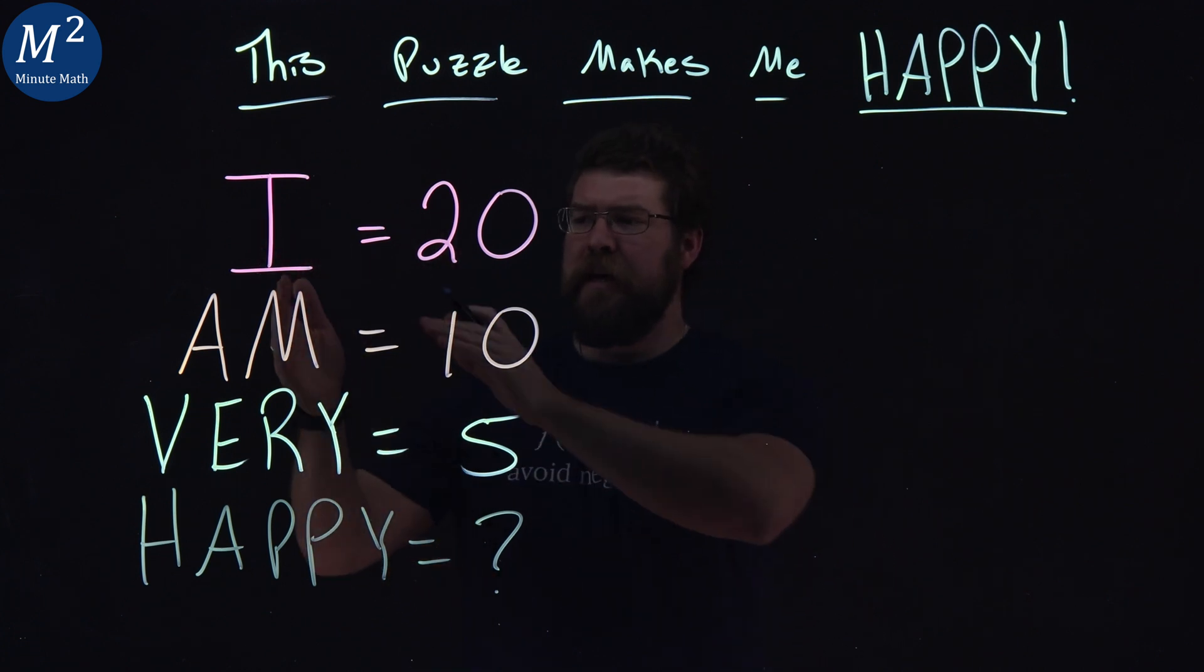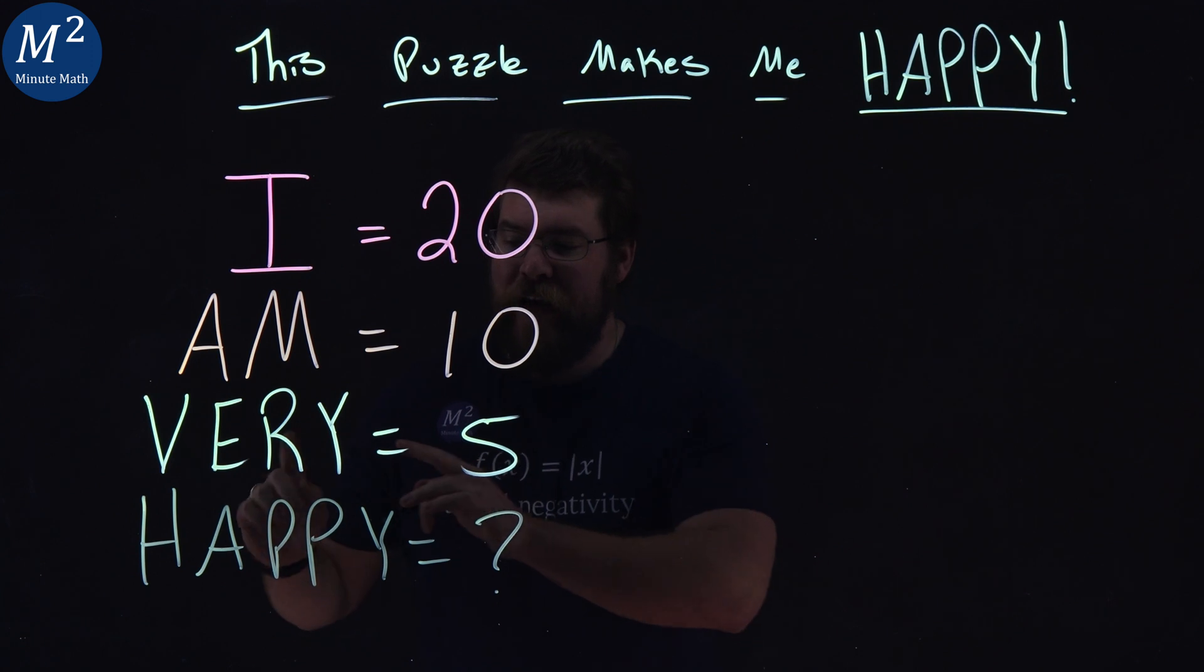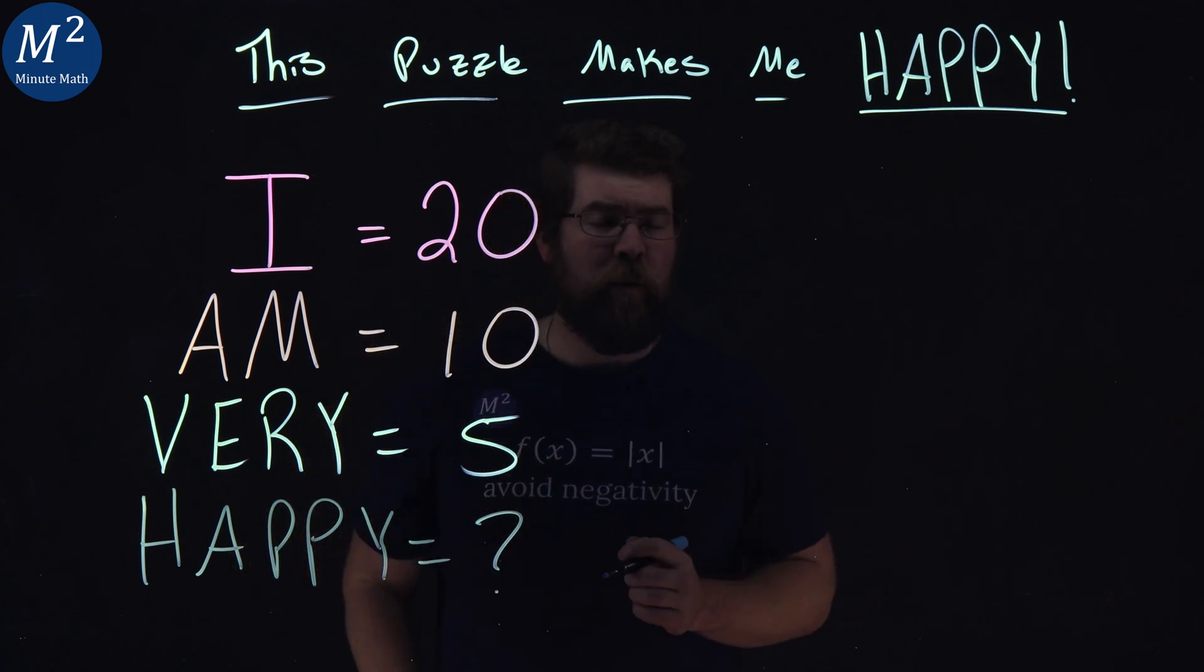I equals 20, am equals 10, very equals 5, and happy equals, well, that's what we have to find.